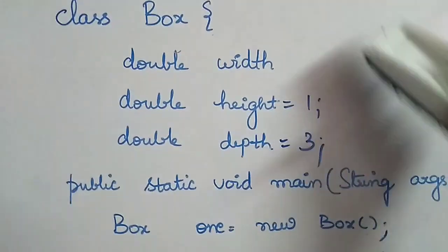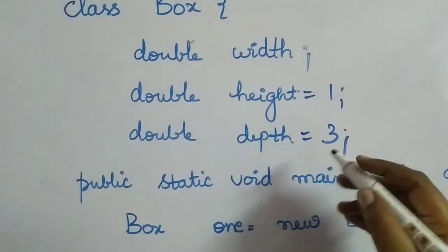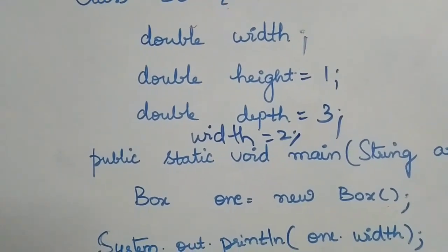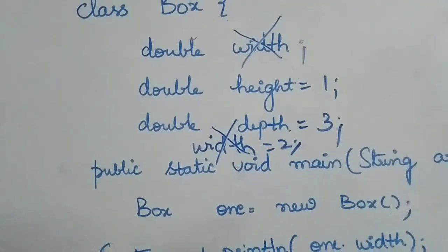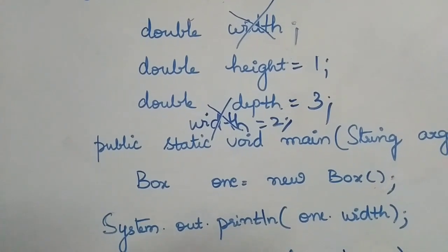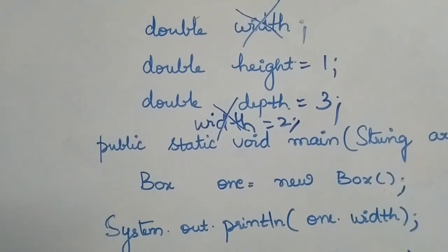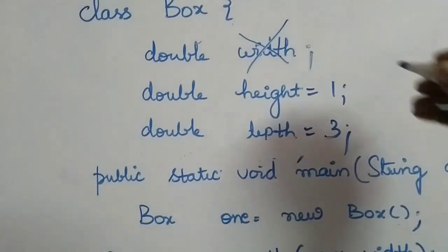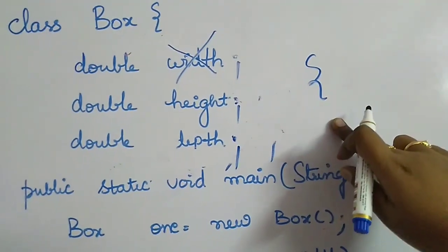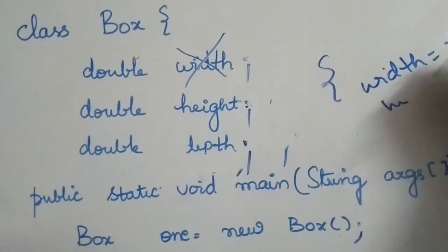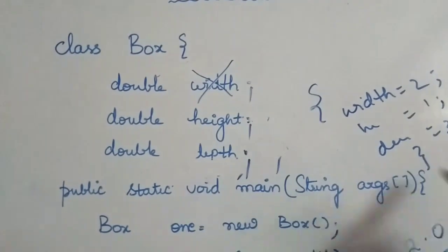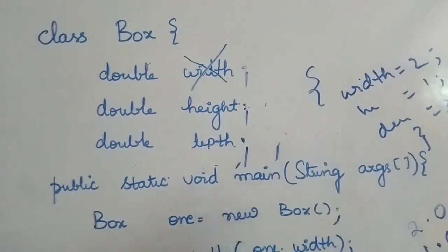You cannot declare an instance variable at one place and then assign it elsewhere in the class body outside a method — declaration at one place and initialization at another is not acceptable for class instance variables. But you can do this using an initializer block: declare width, height, and depth, then write an initializer block — simply a block — and inside it say width = 2, height = 1, depth = 3. Without an initializer block you cannot separate declaration and initialization this way.